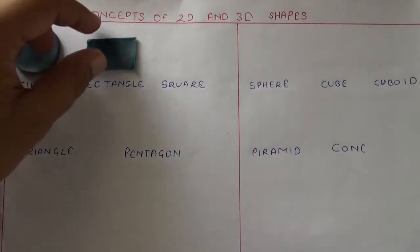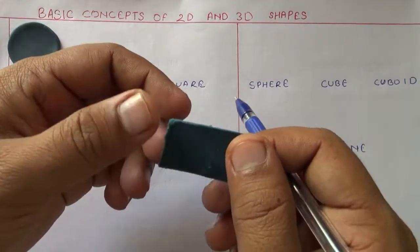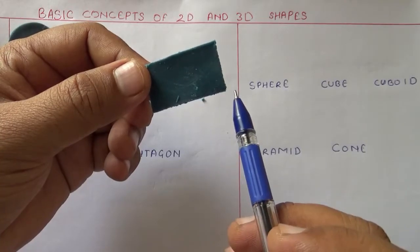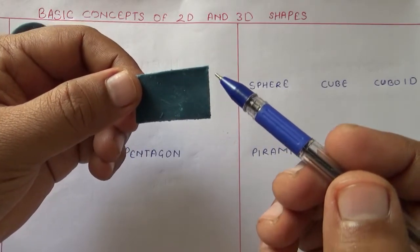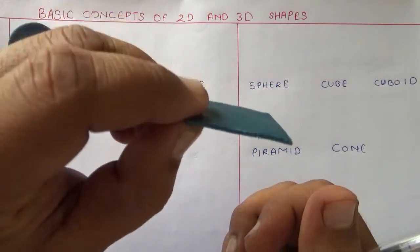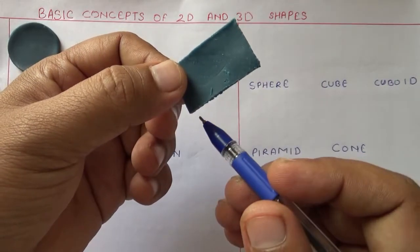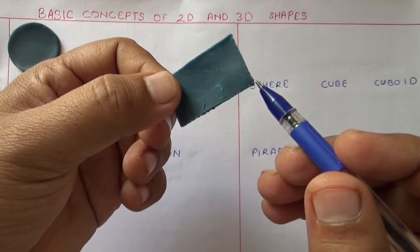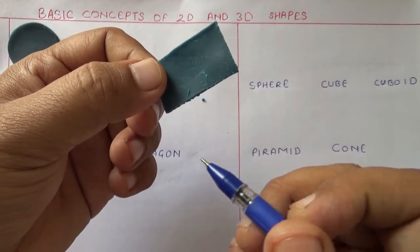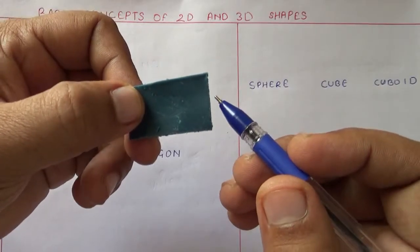Rectangle. A rectangle is a two-dimensional shape which has length and breadth. To measure a rectangle, we need two dimensions: side one and side two. The longest side is known as the length and the shorter one is known as the breadth.